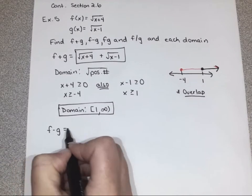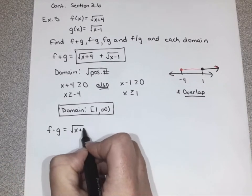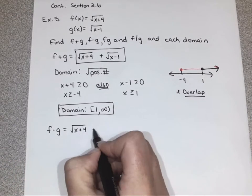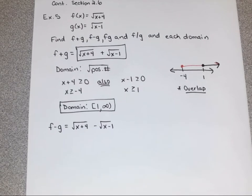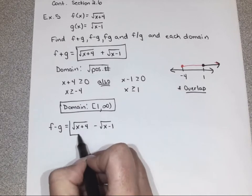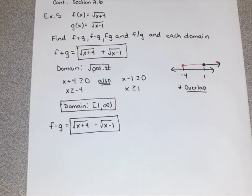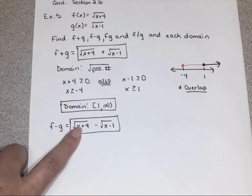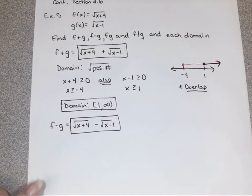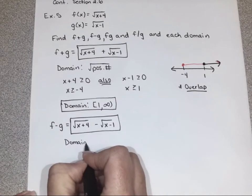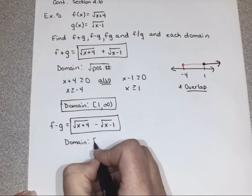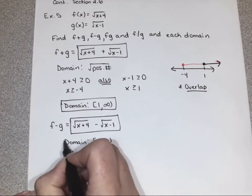So f minus g is very similar. What's the only change when we do f minus g? Instead of a plus sign between them, we're going to have a minus sign. Do I need to redo the domain? No — they're the same square roots and we would still want them to be greater than or equal to 0. So try to look for things like that on the homework where you've already done the work and you don't have to do it again.